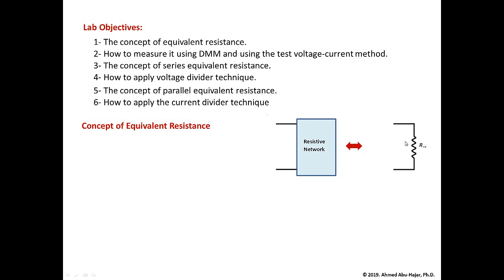The basic idea of R-equivalent is that if we apply a voltage source V across the original circuit, there will be a current drawn from it. This resistive network has one equivalent resistance such that if we apply the same voltage across this single resistor, we get the same current as the one drawn from the resistive network. That's the basic idea behind R-equivalent.